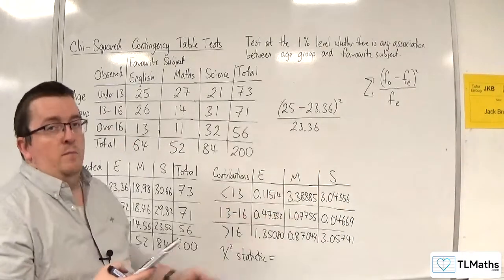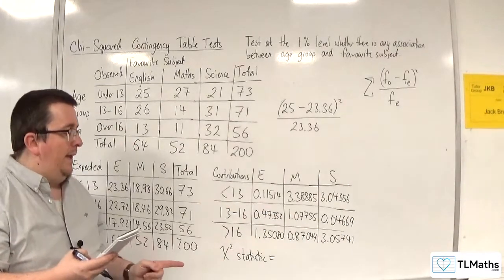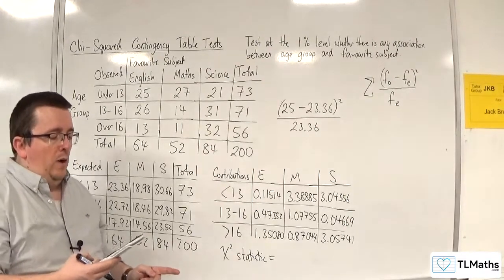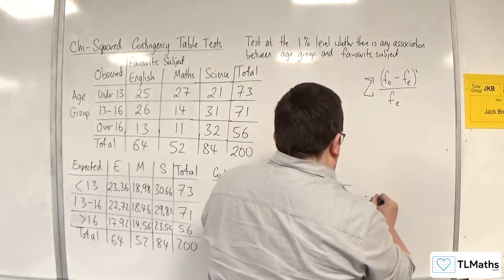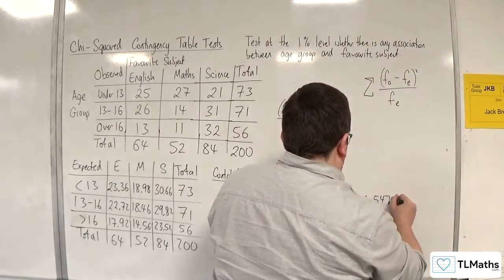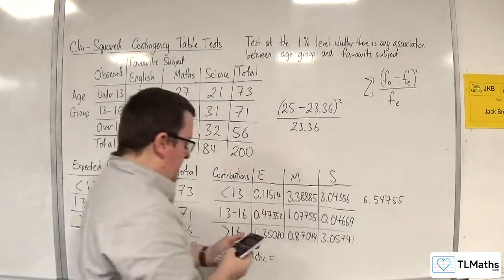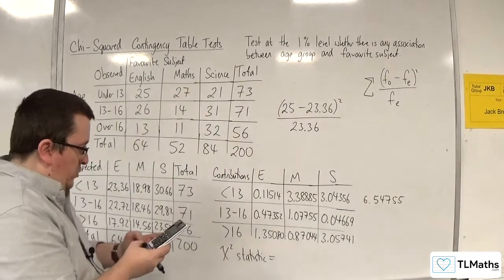So I'm not going to write them all out into one calculator display in case something goes wrong. So I'm going to get the sum for that. So 6.54755. Then I'm just going to do the next row.